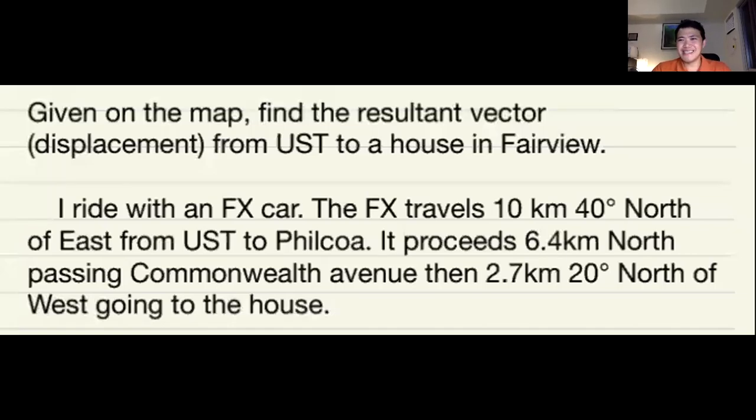Okay, so let's do this last example. This is a little bit complicated—you have three vectors, and this is real, real-life. Given on the map, I will show you the map later. Find the resultant vector displacement from UST to a house in Fairview. I used to live in that part of Fairview.